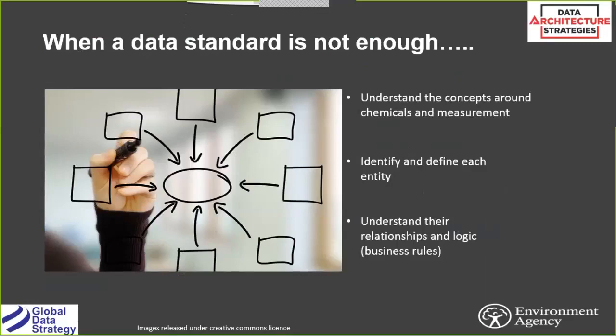This is the moment Donna talked about earlier — where the penny finally dropped. I went: I know this isn't right, I know we've got to do something, and I think I need a data model. We needed to understand the concepts around chemical measurement, and identify and define each entity really clearly so we could say what was a chemical, what was a unit of measure, and what was a measuring method. We needed to understand their relationships and their logic.